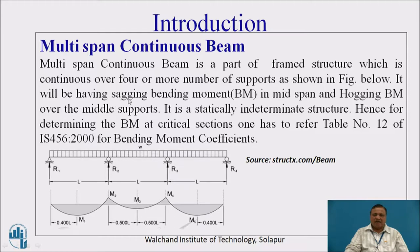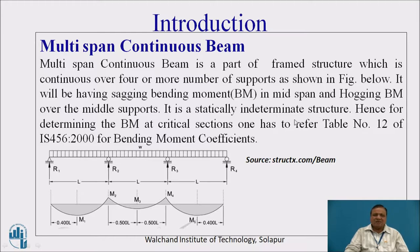It will be having a sagging bending moment in mid-span — that means for every span the sagging bending moment is there at the mid-span, including the third span. And there is a hogging bending moment over the middle supports. It is a statically indeterminate structure because the unknowns are more than 3. Hence, we are supposed to determine the bending moment at critical sections by referring to Table 12 of IS-456-2000 for bending moment coefficients.